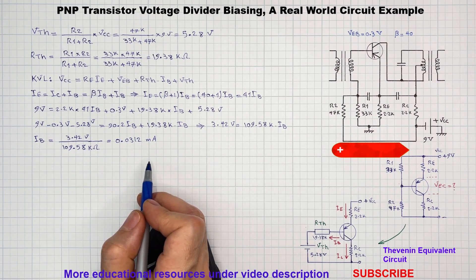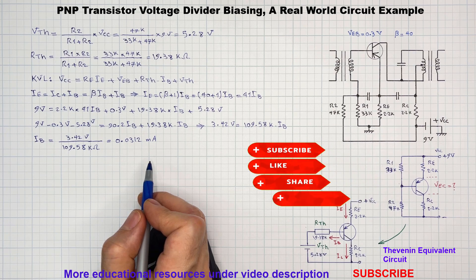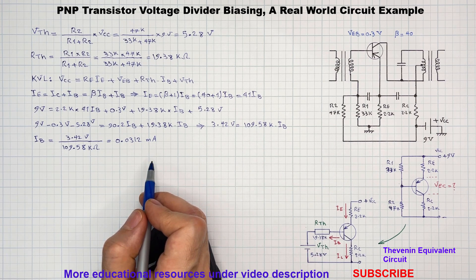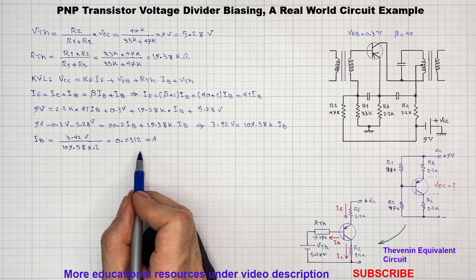By the way, if you like what you are watching please hit the like button and also subscribe to the channel if you haven't done yet. Now back to the video. With knowing the base current we can find the collector and emitter currents.